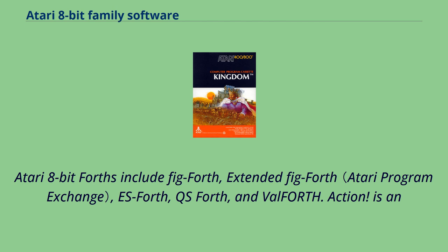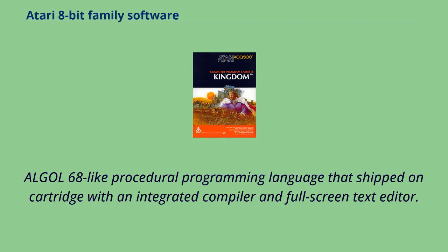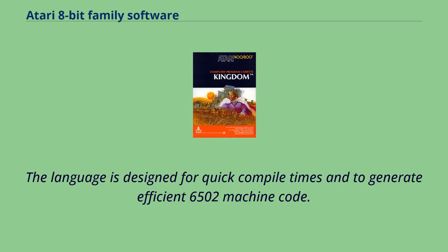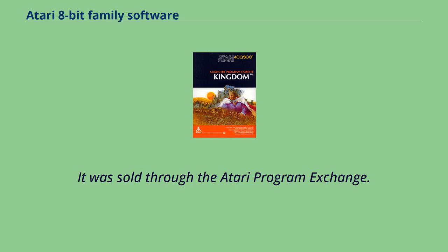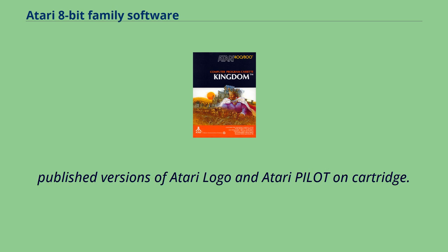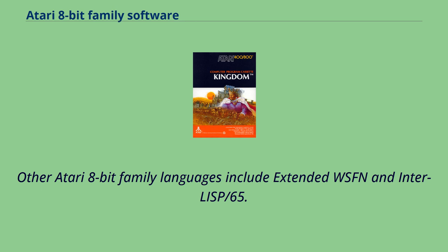Action! is an Algol 68-like procedural programming language that shipped on cartridge with an integrated compiler and full-screen text editor. The language is designed for quick compile times and to generate efficient 6502 machine code. Deep Blue C is a port of Ron Kane's Small C compiler, sold through the Atari Program Exchange. Atari Inc. published Atari Logo and Atari Pilot on cartridge. Other Atari 8-bit family languages include Extended WSFN and Inter-Lisp/65.